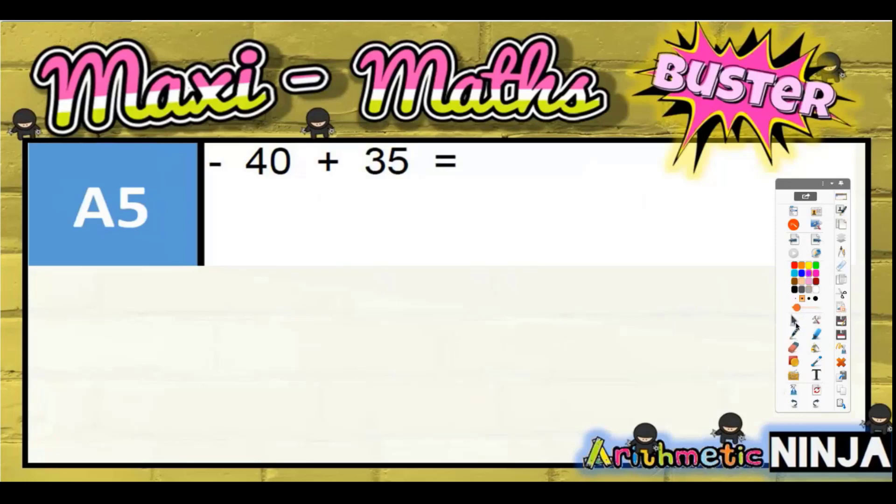Question five: negative 40 plus 35. Well, negative 40 plus 35 means if you imagine a number line with zero there and minus 40 down here, it would take you—if you come back up, if you add 10, you would get to negative 30, because we're coming back up towards zero, we're coming this way back up towards zero.